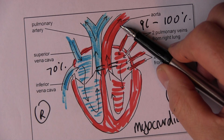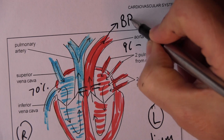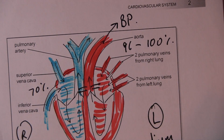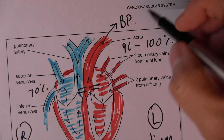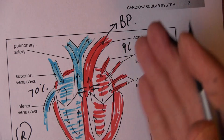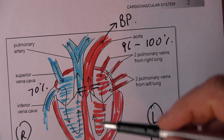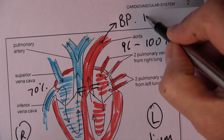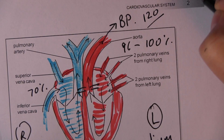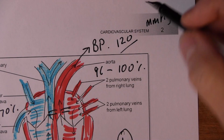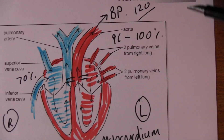The blood coming out of the aorta represents the systemic circulation blood pressure, which we measure when we take blood pressures. When the heart is contracting — that's called systole — the pressure in the ventricle is high, forcing blood into the aorta at high pressure. In a typical person that's about 120 millimeters of mercury.